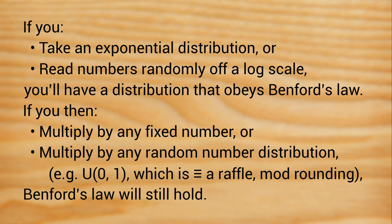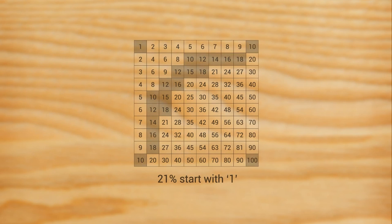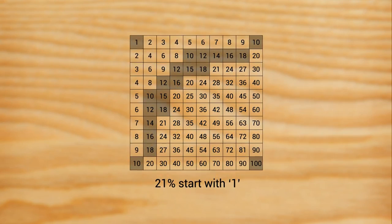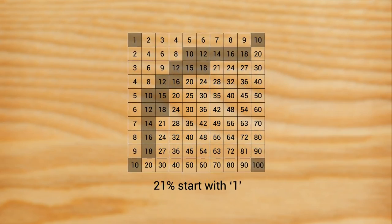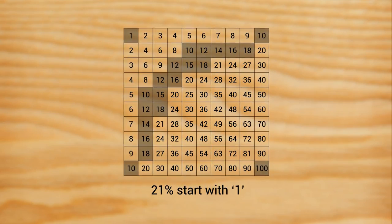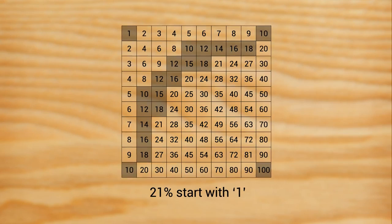So yes, Benford's law holds when you run raffles with the number of tickets drawn from an exponential distribution. But that's 100% because of the exponential distribution, and 0% to do with the raffle. So just like the preponderance of numbers starting with 1 in the times table, I think that the raffle idea just serves as one of a million possible examples of how multiplication drives distributions towards Benford's law, rather than a good explanation of why this happens.